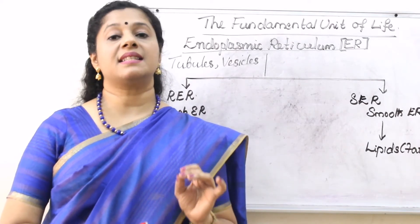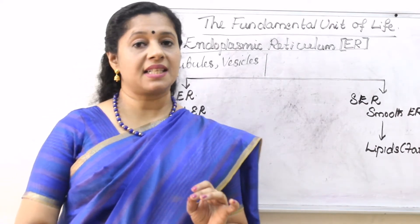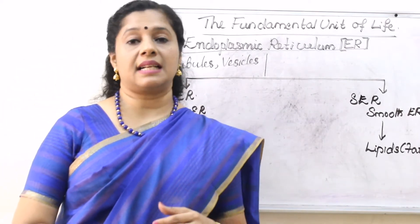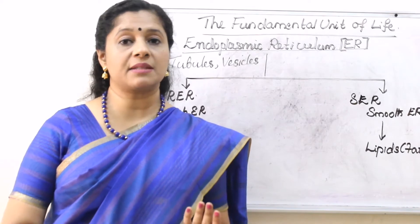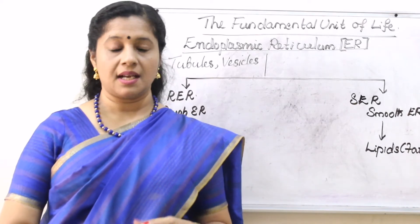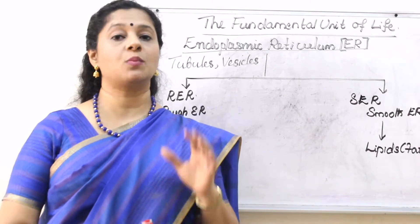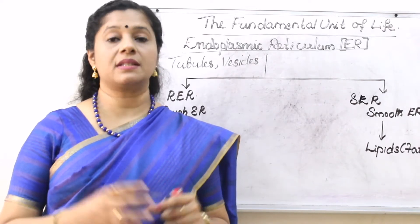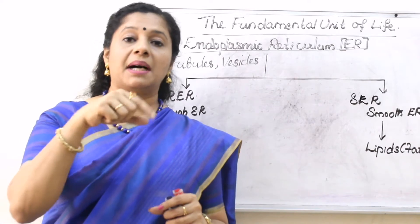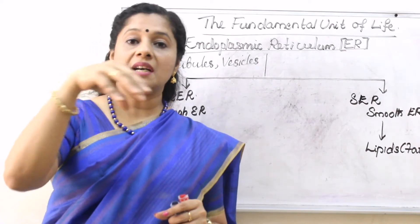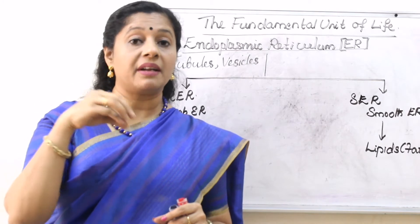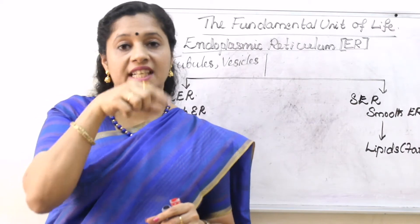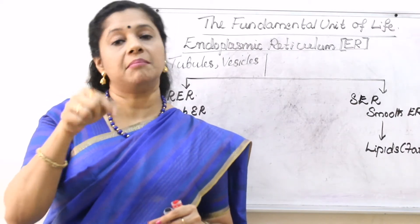Today, we will discuss the cell organelles in detail. We are starting with endoplasmic reticulum. We know in higher cells — that means higher or complex cells, meaning the eukaryotic cells — they have a lot of biochemical reactions taking place within the cytoplasm. To increase the efficiency of those reactions, there are compartmentalizations. That means different parts of the cells are doing different functions, and each one is isolated from the other or the rest of the cytoplasm by a membrane.